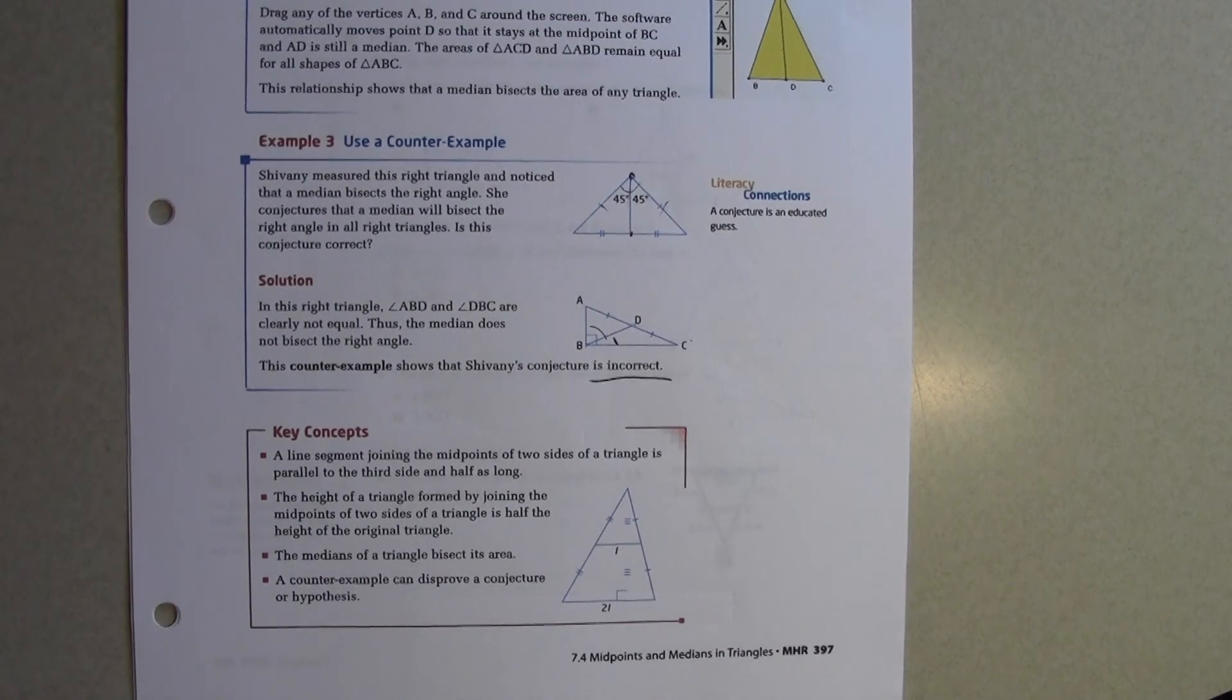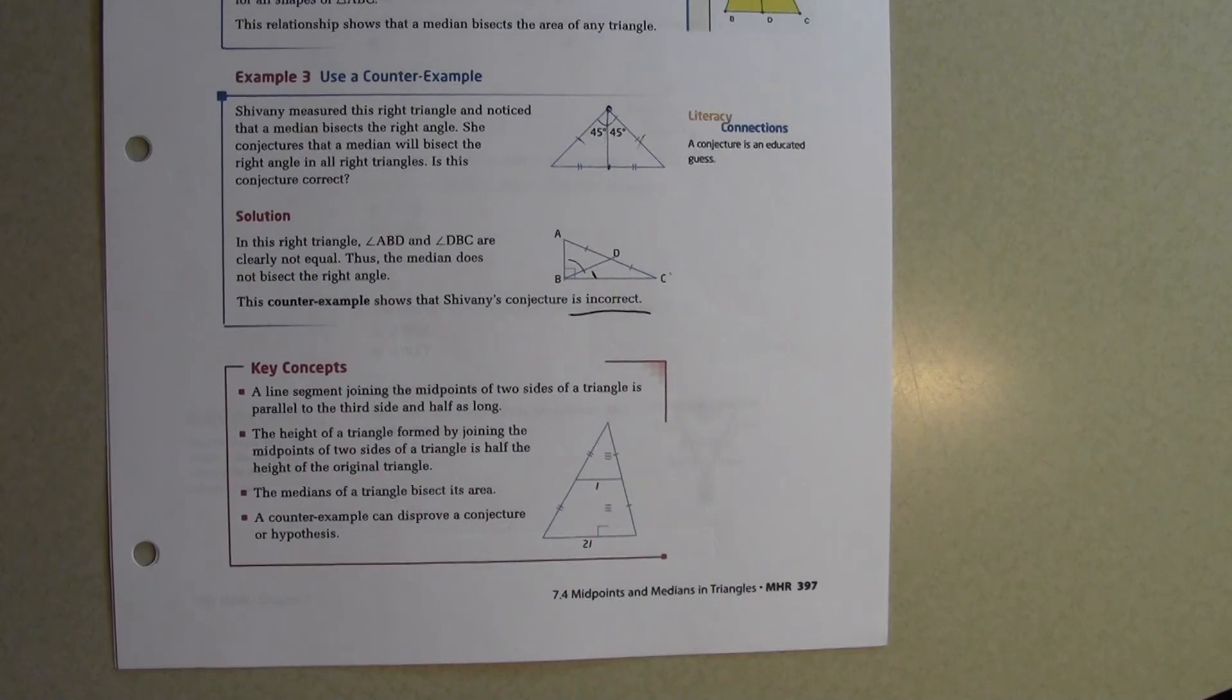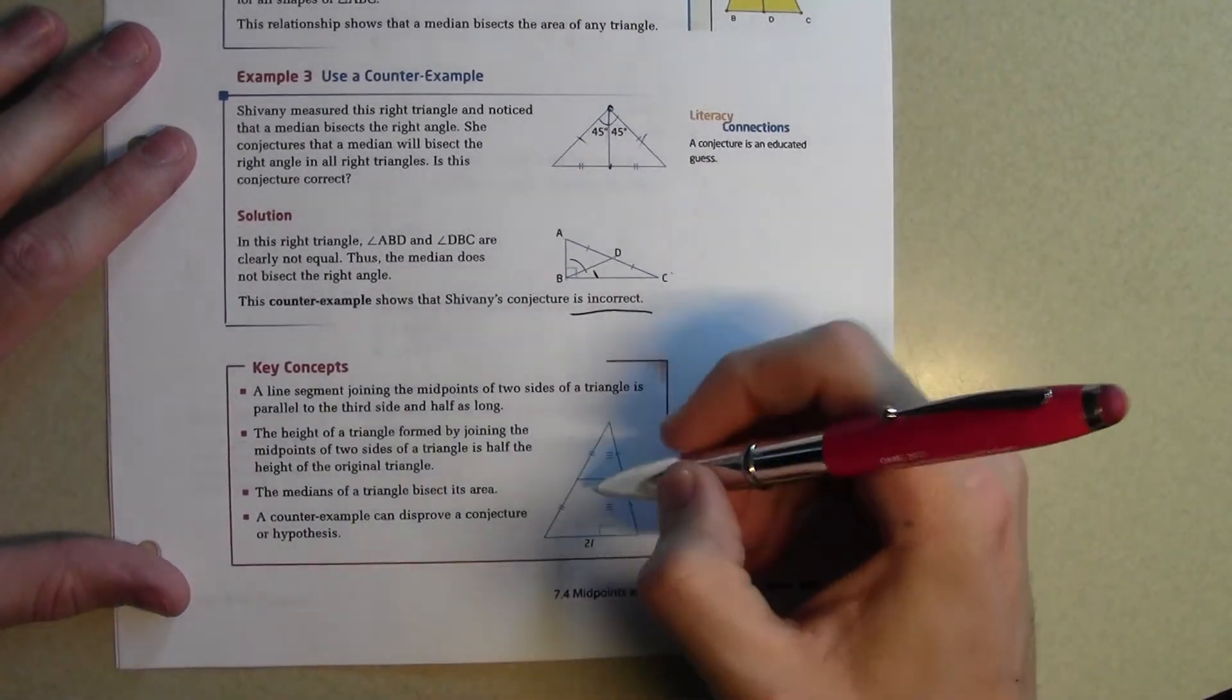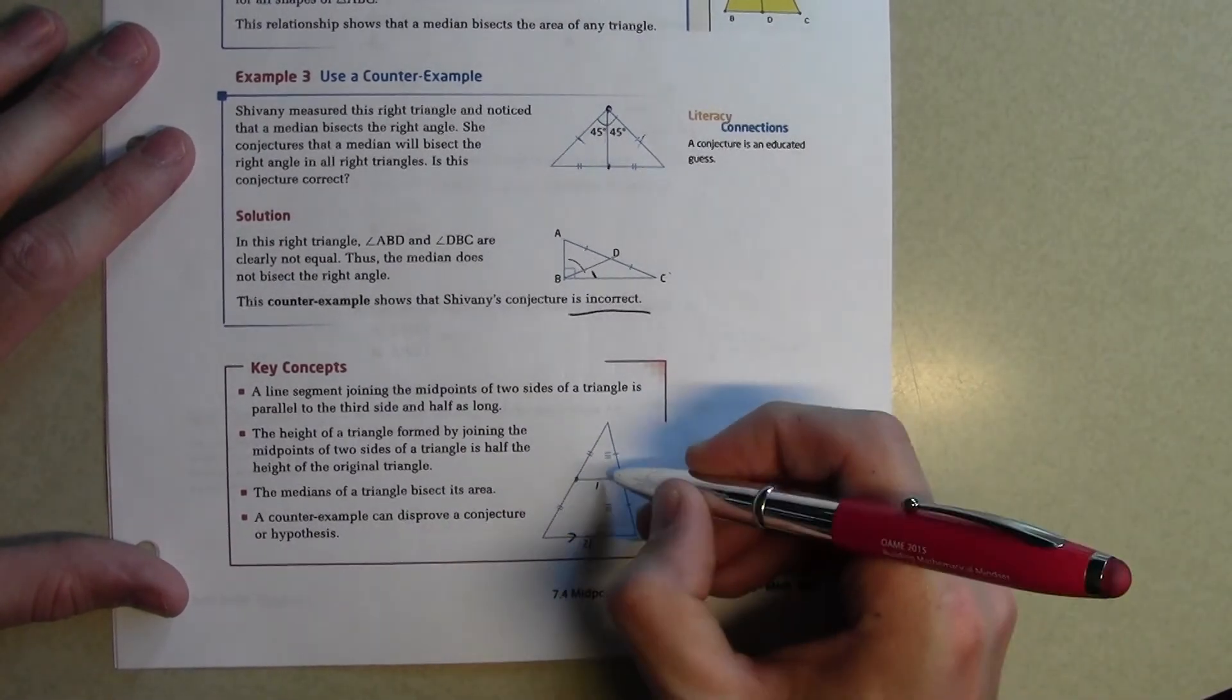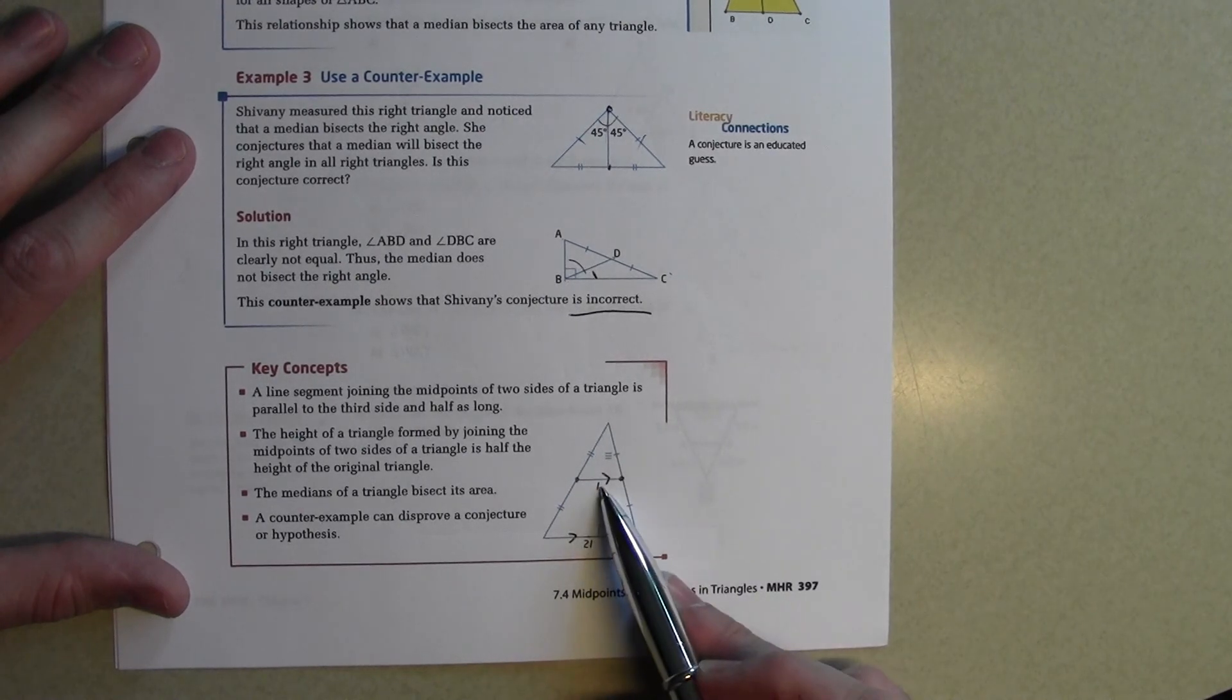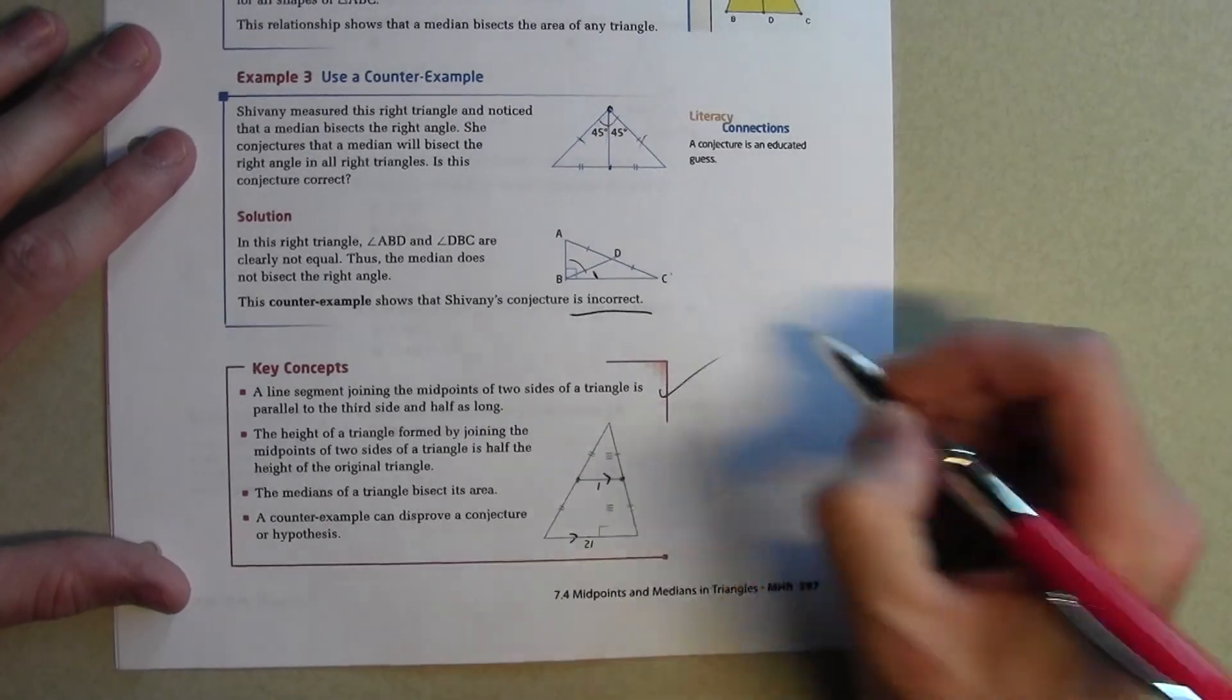I'm not sure why they showed us this example, but in any event, the median does not always bisect the right angle. I'm not sure why we would have thought it did. And just in this particular case, it happened to because it's an isosceles triangle. Finally, the key concepts. A line segment joining the midpoints of two sides of a triangle is parallel to the third side and half as long. So we determined that. If it joins the midpoints, it's parallel to the base and it's half as long. So if this is L, this is 2L. That's the first property we learned.